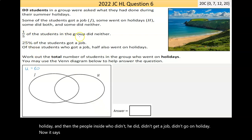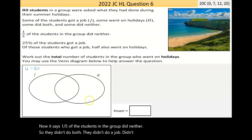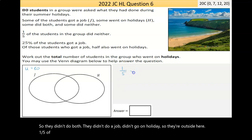Now it says one-fifth of the students in the group did neither. So they didn't do a job, didn't go on holiday. So they're outside here. Now one-fifth of the universal set is one-fifth times 80, which is 16. So that's 16.